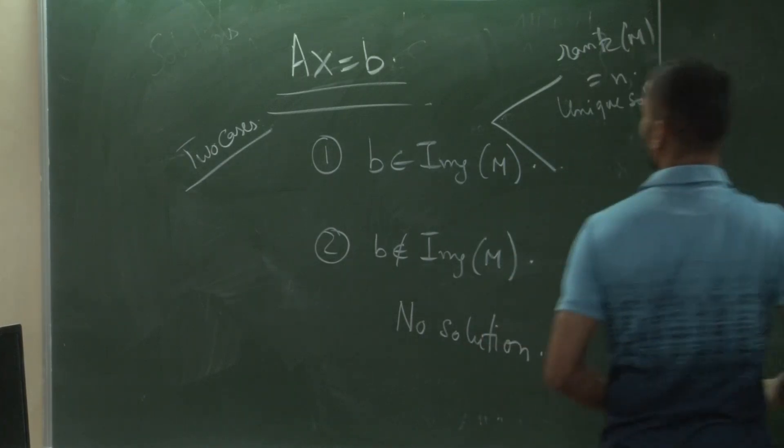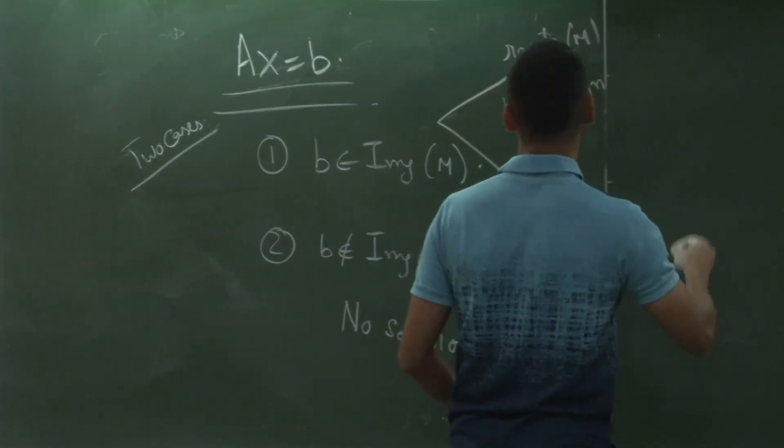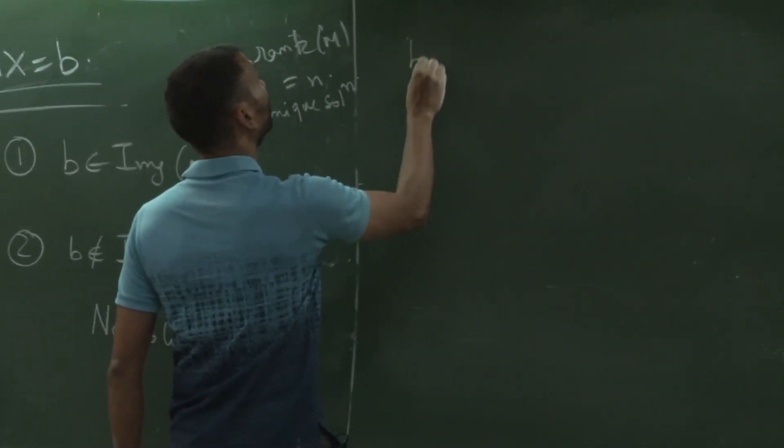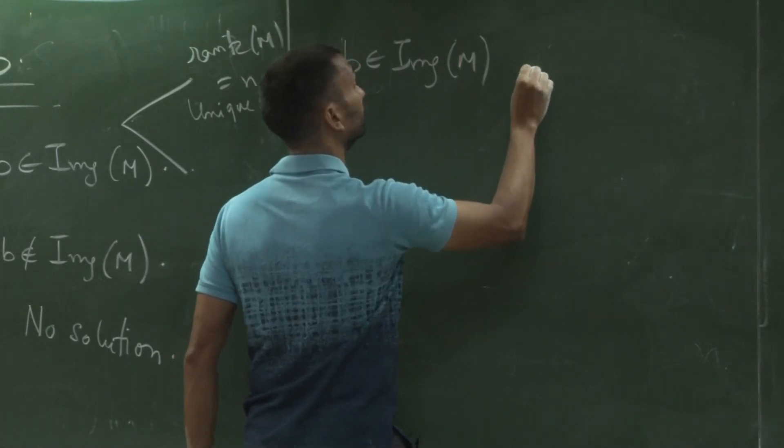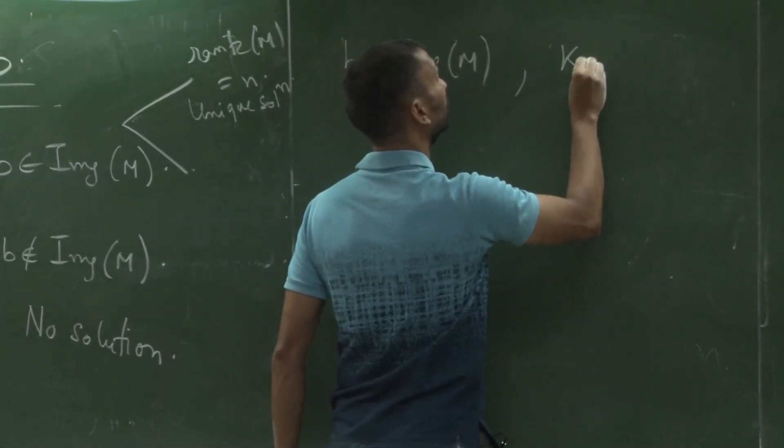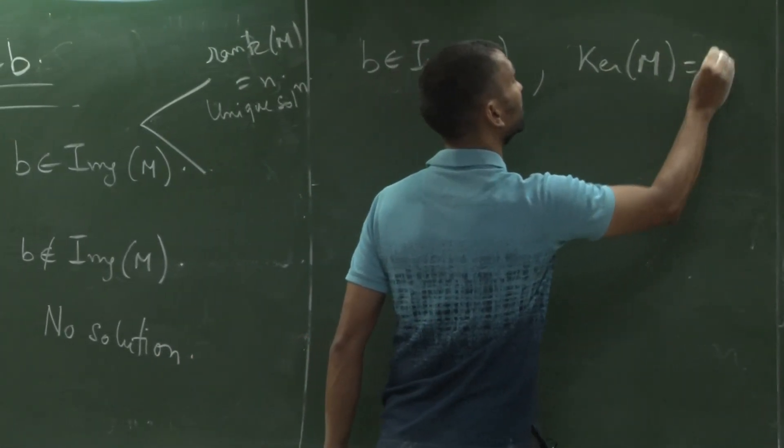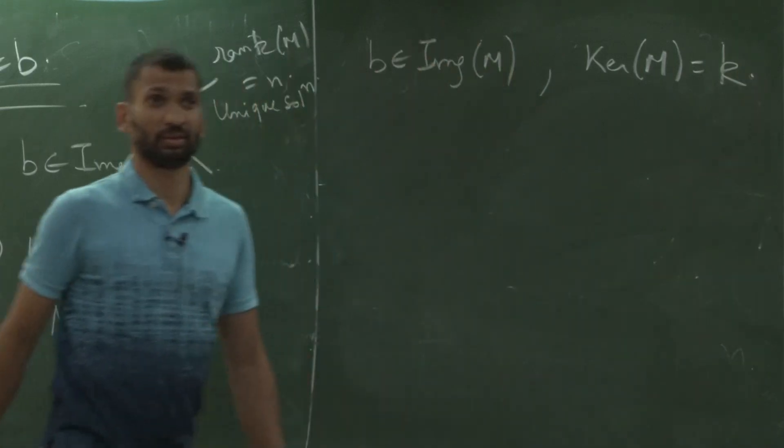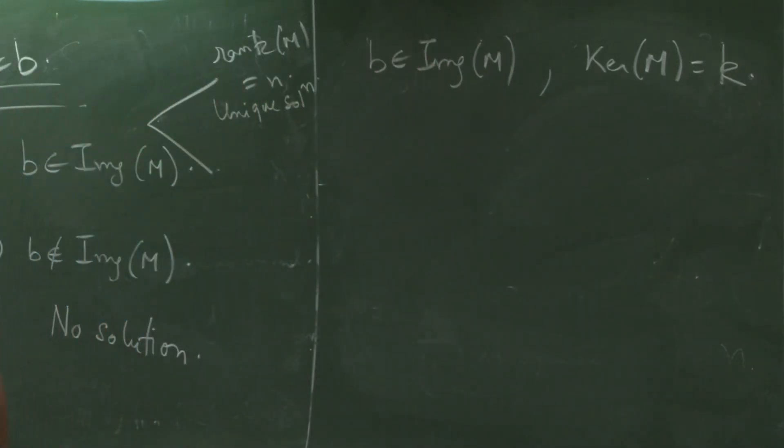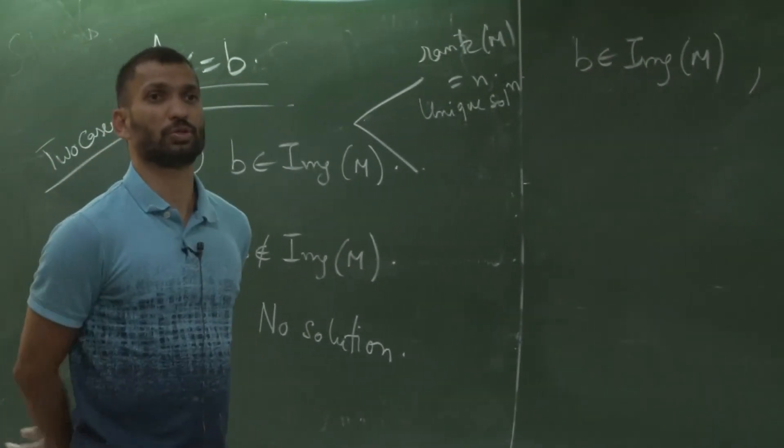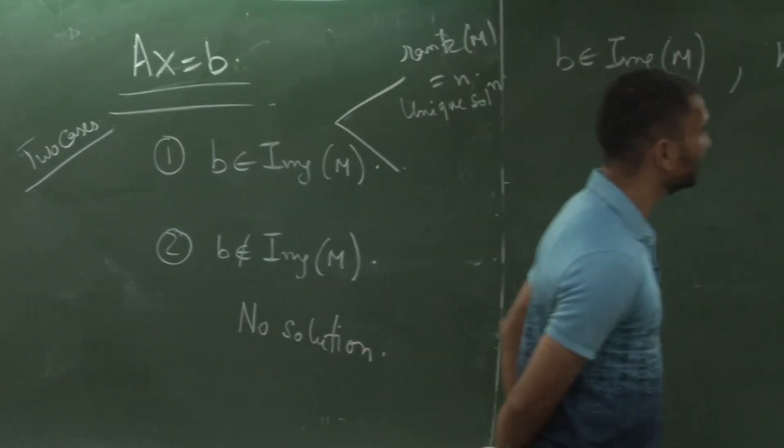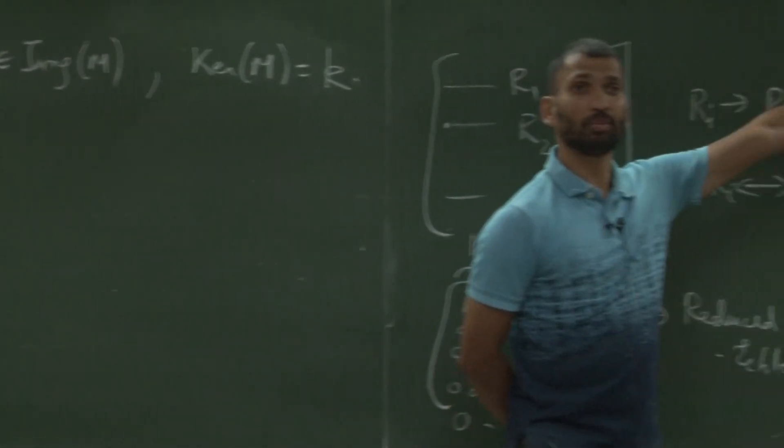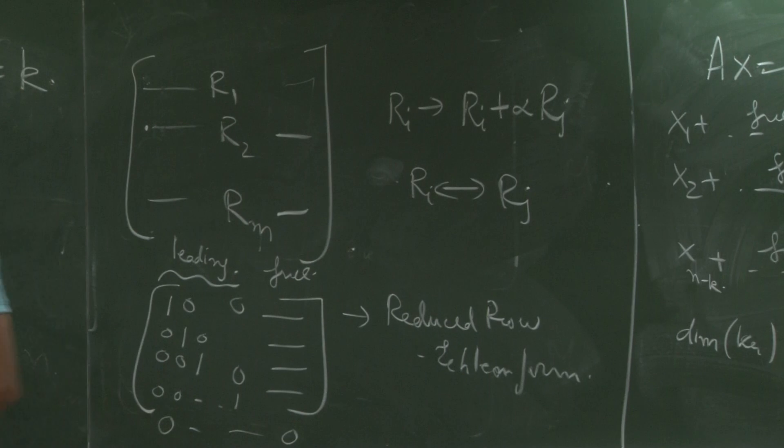The case we are left with is, and kernel of M has some dimension k, right. Then what are the all possible solutions. And here we can take help from Ax equal to 0. How?